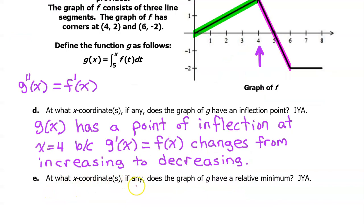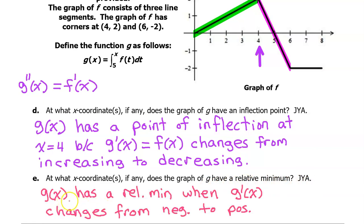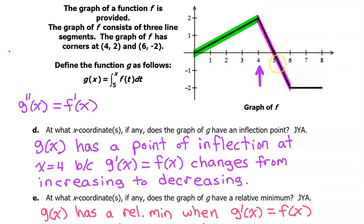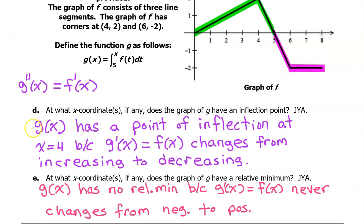Part E. At what x-coordinates, if any, does the graph of g have a relative minimum? We know that g of x has a relative min when g prime changes from negative to positive, because that would mean that the slope is going from decreasing to increasing — thus relative min. But remember that g prime of x is equal to f of x. So where does f of x change from negative to positive? Never! f of x is positive from 0 to 5, and negative from 5 to 8. It changes from positive to negative at 5 — it never changes from negative to positive. So our answer is: g of x has no relative minimum, because g prime of x, which equals f of x, never changes from negative to positive.